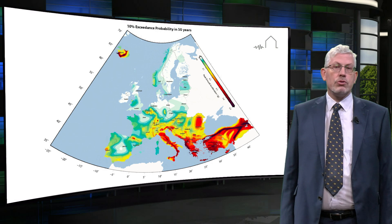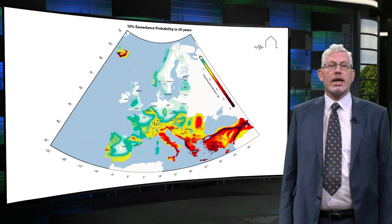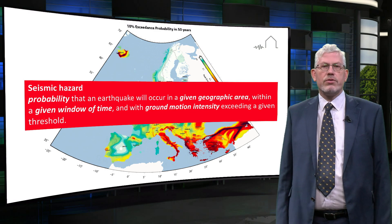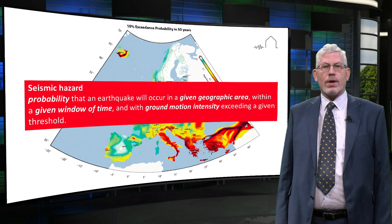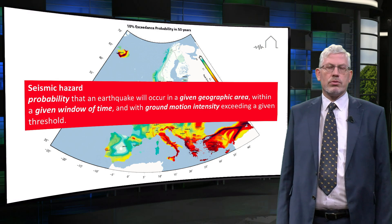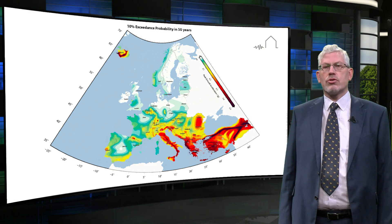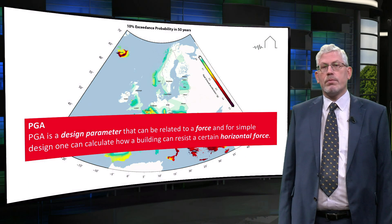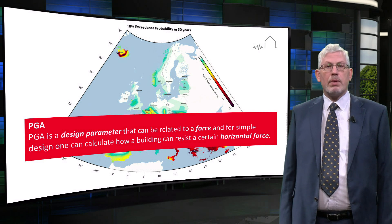PGA is most commonly used in seismic building codes such as Eurocode 8 and is often plotted on seismic hazard maps. A seismic hazard is the probability that an earthquake will occur in a given geographic area within a given window of time and with ground motion intensity exceeding a given threshold. Recently, the SHARE project developed a seismic hazard map to harmonise the seismic hazard across Europe. PGA is a simple design parameter since it can be used to derive the horizontal force due to an earthquake, considering Newton's second law of motion, where force equals mass times acceleration.